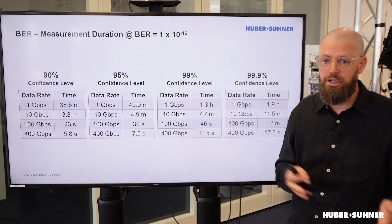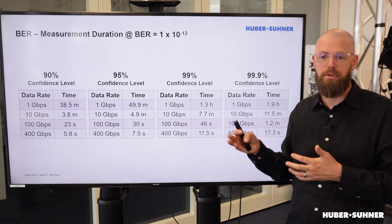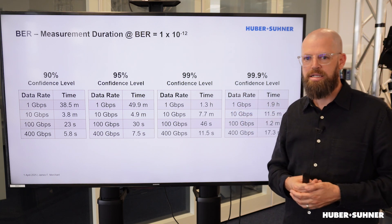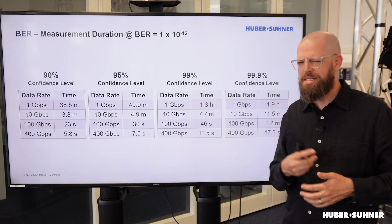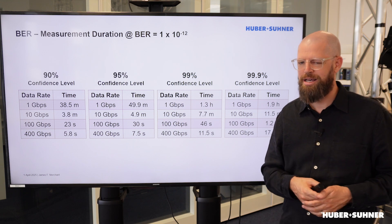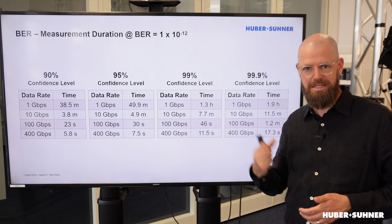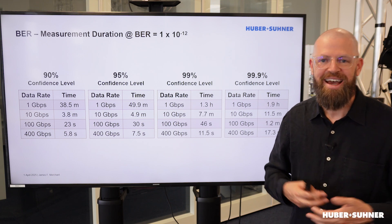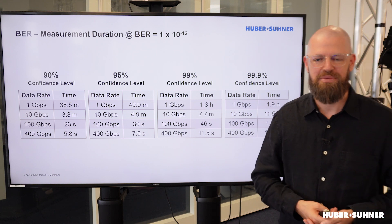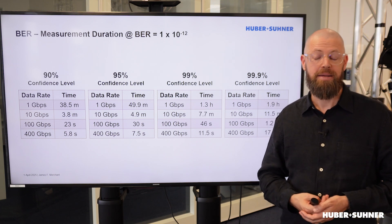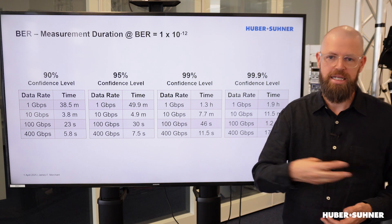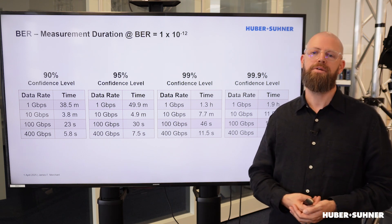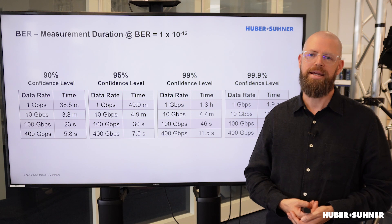So you can see there's a huge difference between 1 gig and 400 gig. So maybe it's an idea to upgrade your system to a higher data rate because that will save you a lot of time — no, just kidding. I hope you enjoyed this video and that you learned something. If so, please leave a comment, and remember to follow our channel so you get your regular dose of Brainsnack.